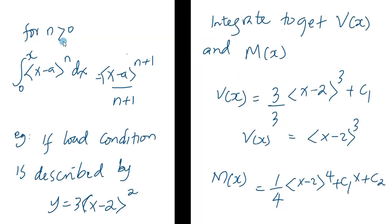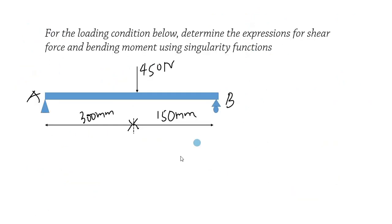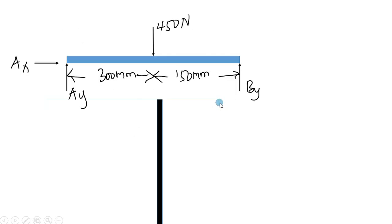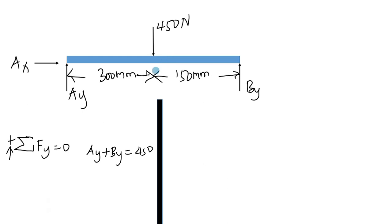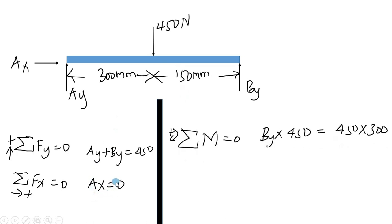Now let us look at a worked example. The given loading condition has a pin support and a roller support, with the beam carrying a load of 450 newtons at 300 mm from A and 150 mm from B. We first draw the free body diagram and apply equilibrium conditions. The sum of vertical forces gives Ay plus By equals 450 N, and the sum of horizontal forces gives Ax equals zero.